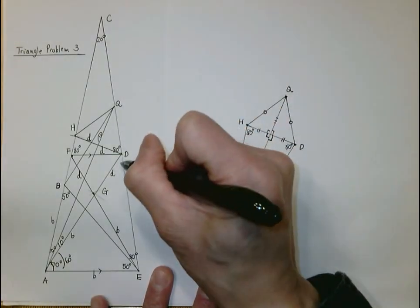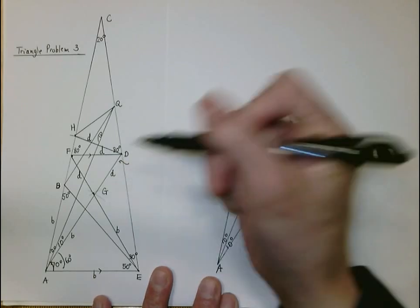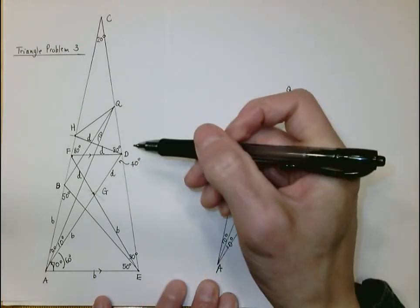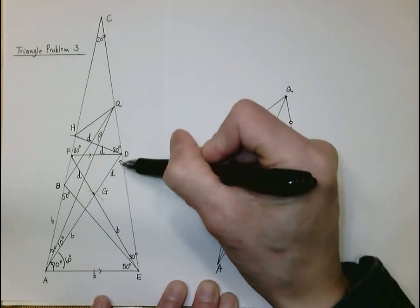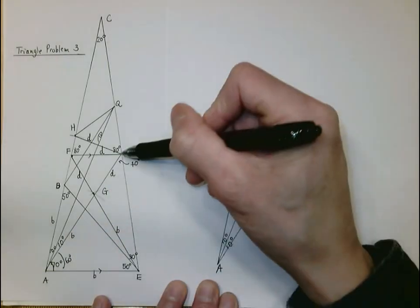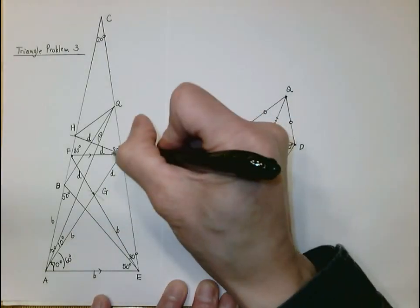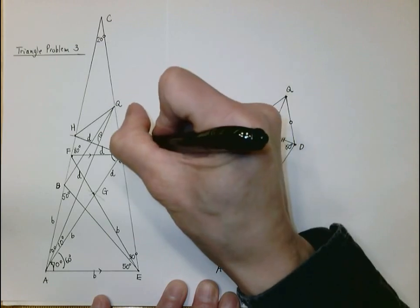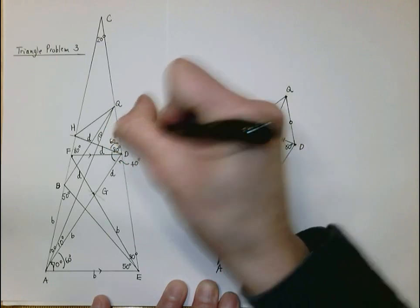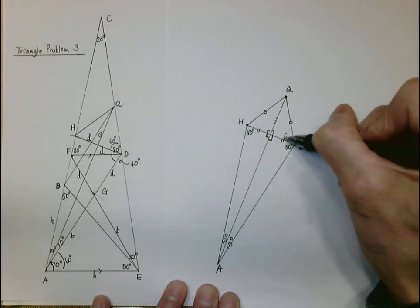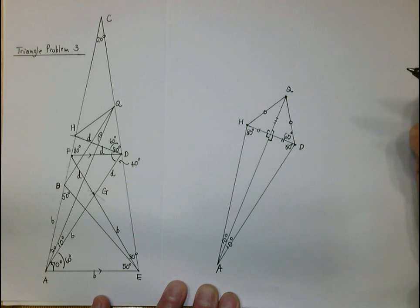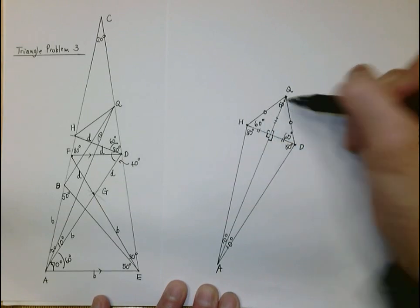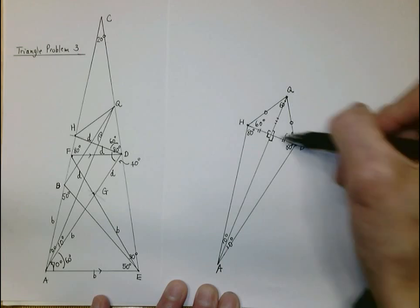Looking at this angle: it is 40 degrees, because there is 60 degrees and 80 degrees — the sum of the three angles is 180 degrees. This angle here is 80 degrees; 40 and 80 gives 60 degrees. So this angle must be 60 degrees, and since it is an isosceles triangle, if this is 60 then this one will be 60 and that one will be 60 as well — making this an equilateral triangle.